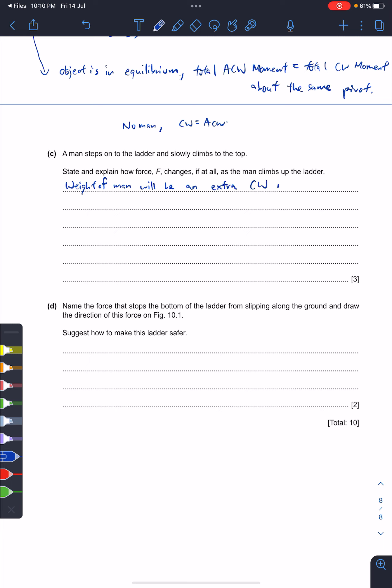The weight of the man will be an extra clockwise moment. So the weight of the man will exert an extra clockwise moment. It means that your clockwise moment is now greater than the anti-clockwise moment.